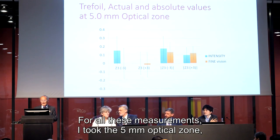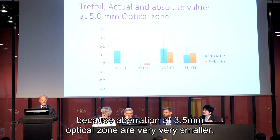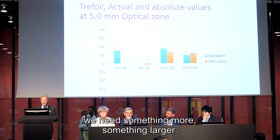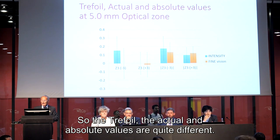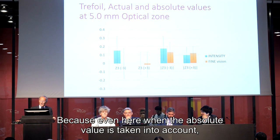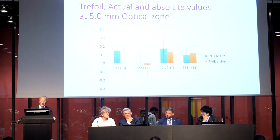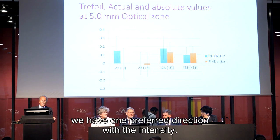For all these measurements, I took the 5 mm optical zone because aberrations at 3.5 mm optical zone are very, very small, and so to find out if any difference exists we need something larger. The actual and absolute values of trefoil are quite different, because even here when the absolute value is taken into account the difference is not significant, while it seems that at least with trefoil we have slightly higher values with the Intensity.